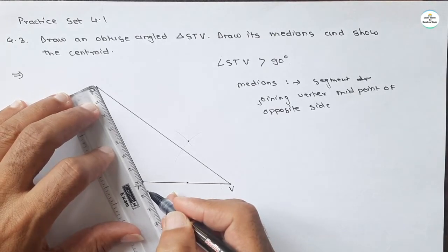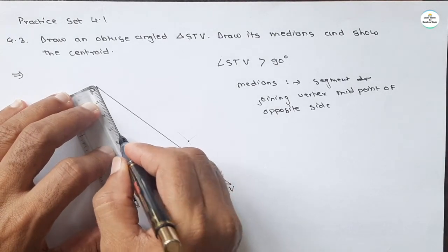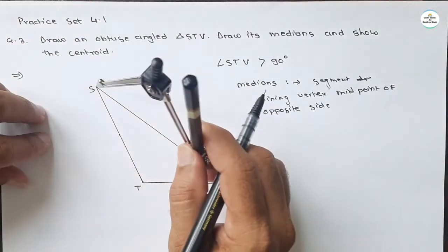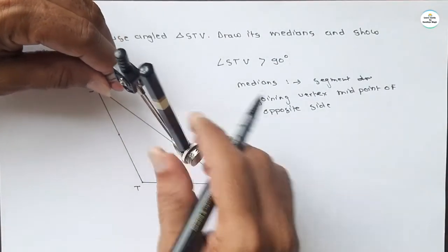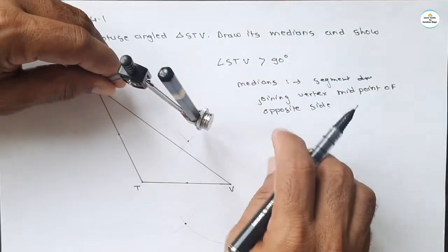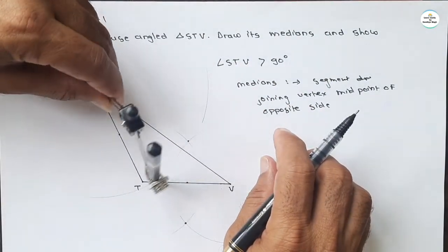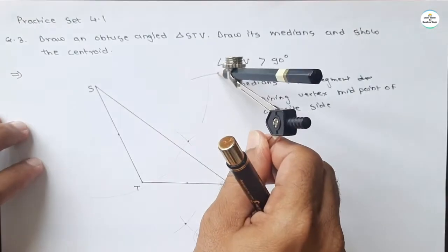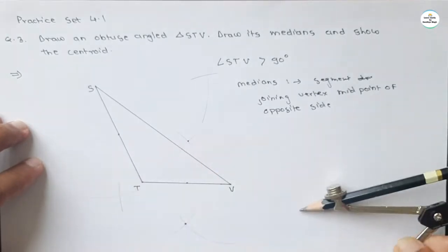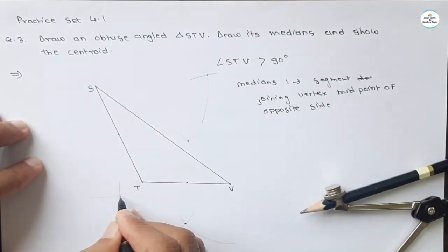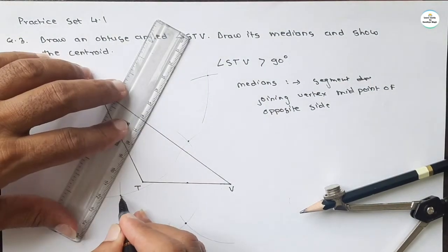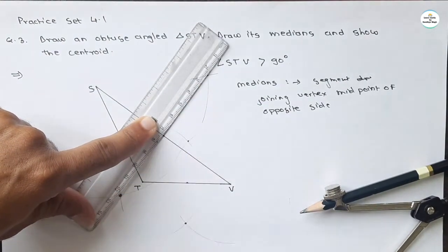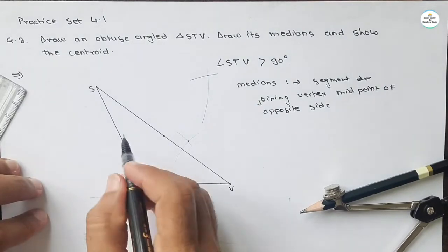Similarly, we draw the midpoint of the next side. Since we drew it as 7 centimeters, the midpoint will be at 3.5 centimeters. Draw an arc — take more than half of this length — then draw arcs on both sides of the line, and also draw an arc with center V. The two intersecting points, when joined, will cut segment SV at its midpoint. These are the three midpoints.